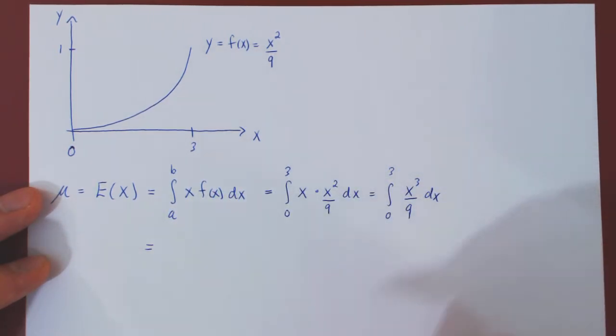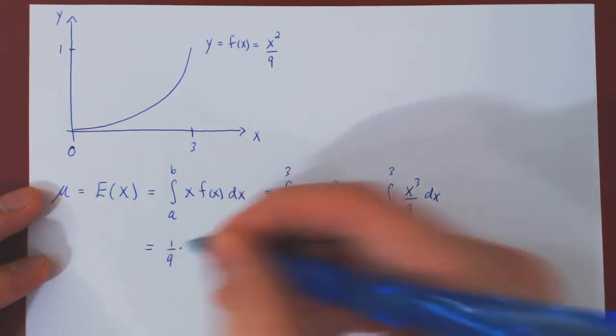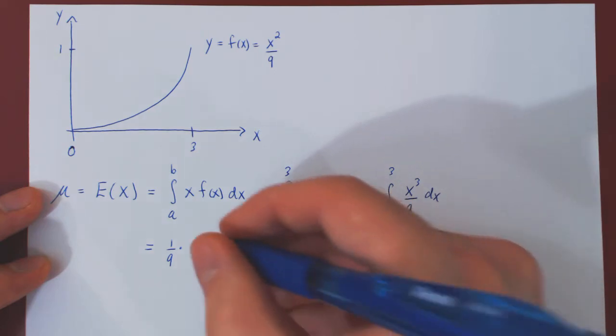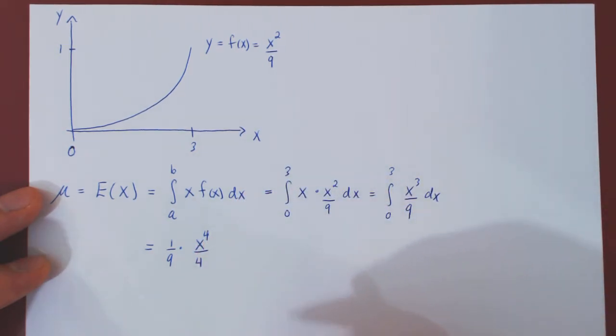1 over 9 is a constant multiple, so we can leave it there. To integrate x cubed we use the power rule. Add 1 to the exponent, divide by the new exponent.